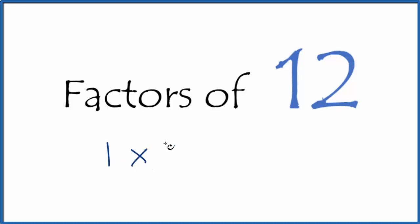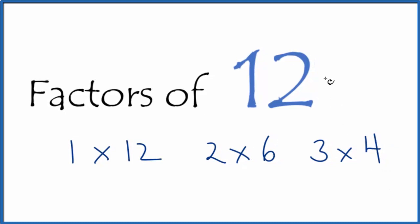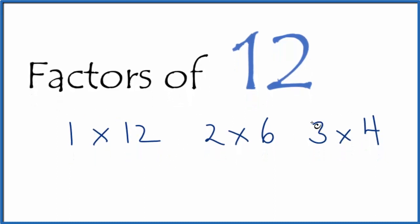We have 1 times 12, then 2 times 6, that equals 12, then 3 times 4, that would equal 12. 5 doesn't go into 12. 6 we have, 7, 8, 9, 10, no. 11, and then we already have 12. So these are the factors of 12.